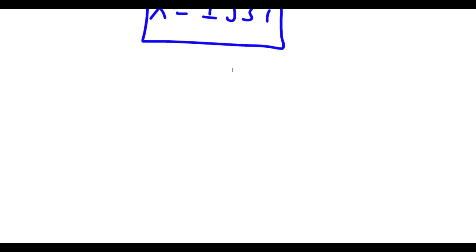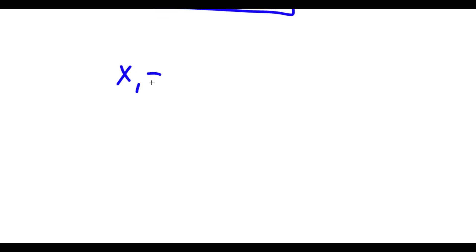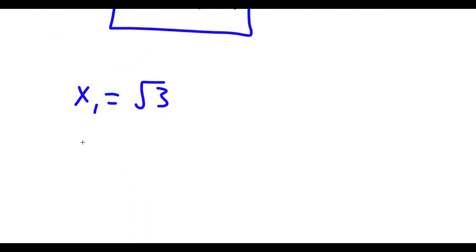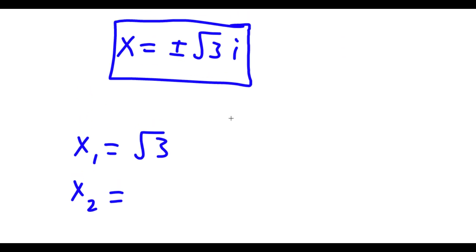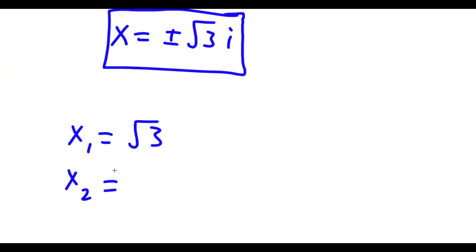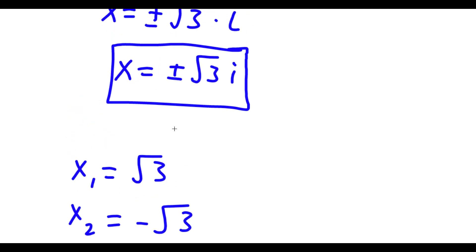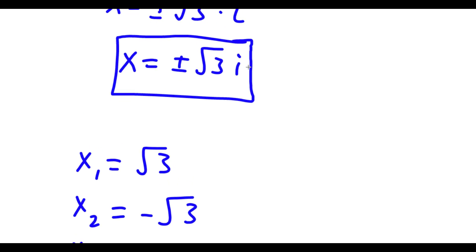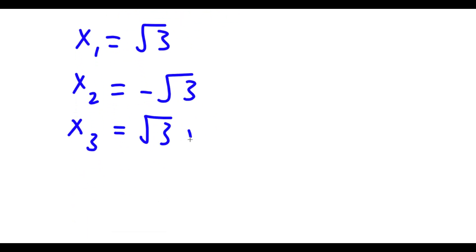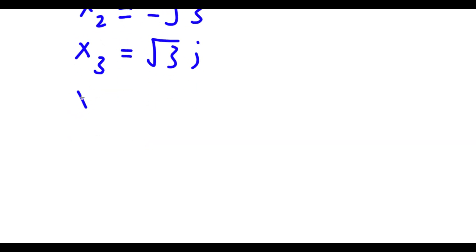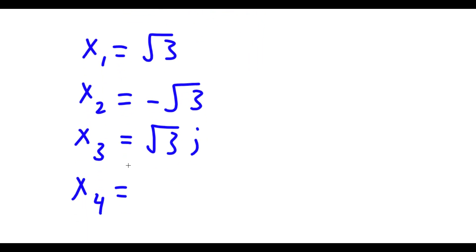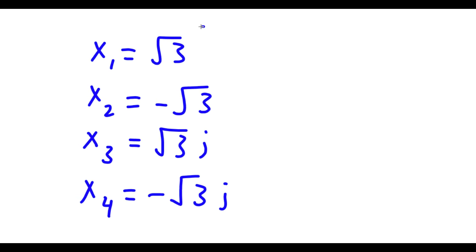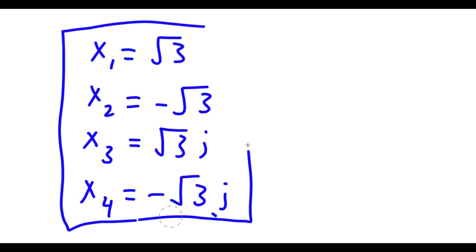So to put it all together, my four solutions are: x1 is positive square root of 3, x2 is negative square root of 3, x3 is positive square root of 3 times i, and x4 is negative square root of 3 times i. So these are my four solutions to this equation.